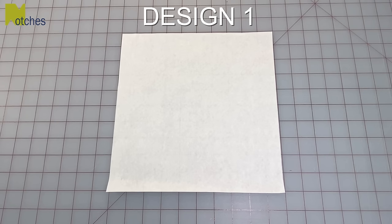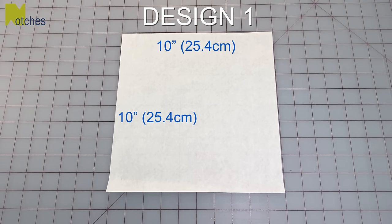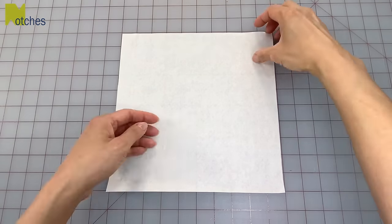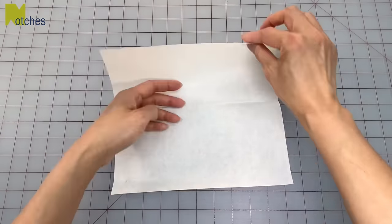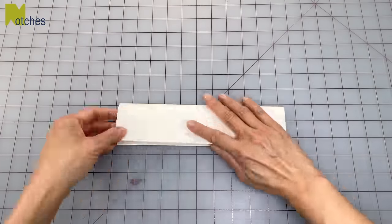To make the pattern for the first design, cut a piece of paper 10 inches by 10 inches. Fold in half and make a crease, then bring your top and bottom edges to that center and fold again.